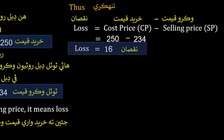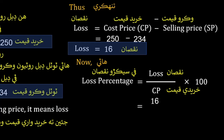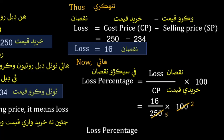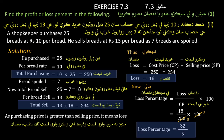To find the loss percentage, use the formula: loss divided by cost price, multiplied by 100. Loss is 16 rupees and cost price is 250 rupees. Dividing both by 50 gives 16/250 × 100, and the loss percentage is 32/5 percent.